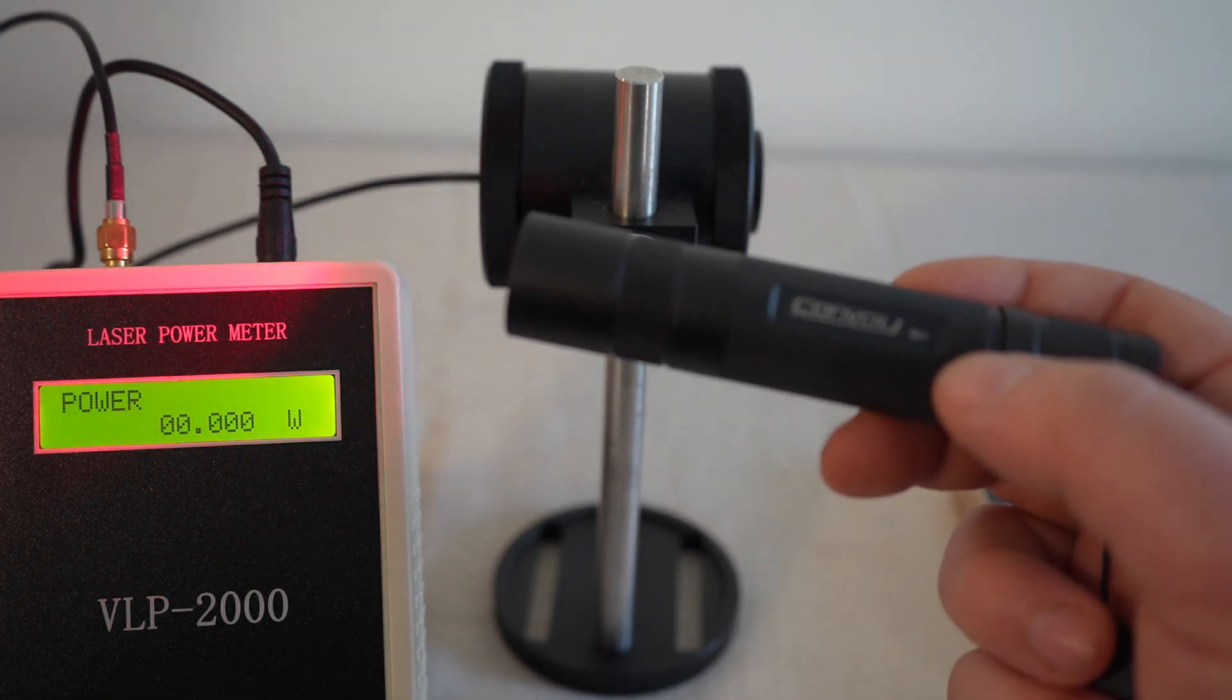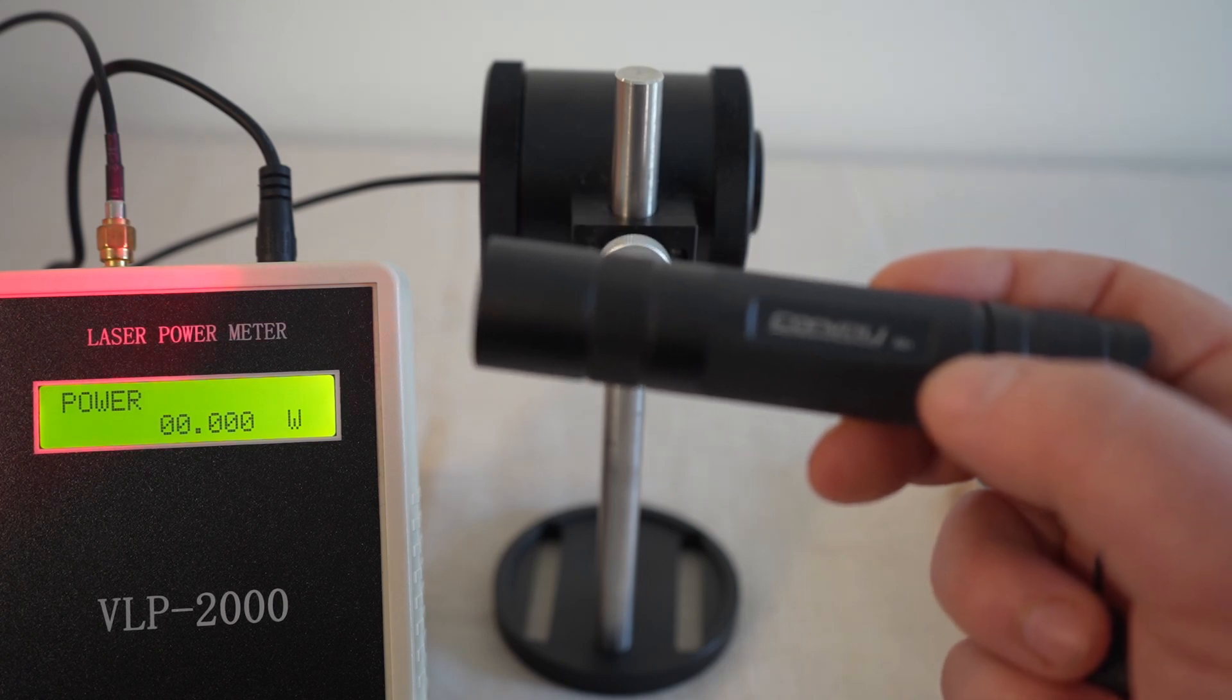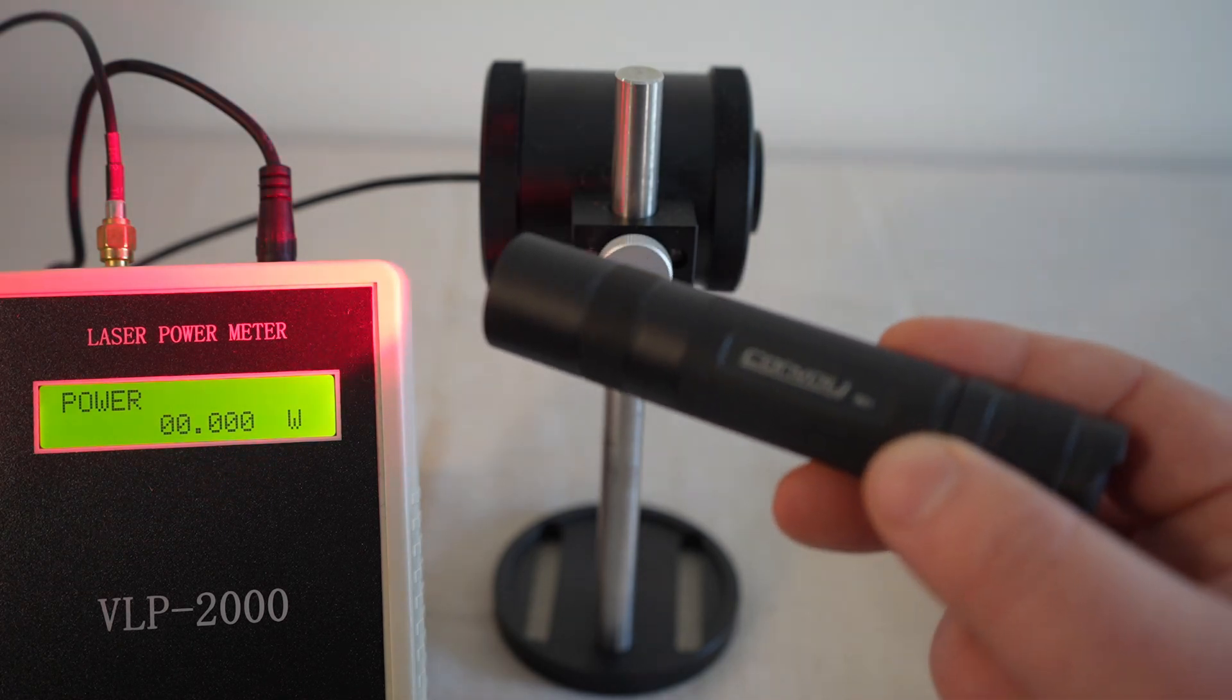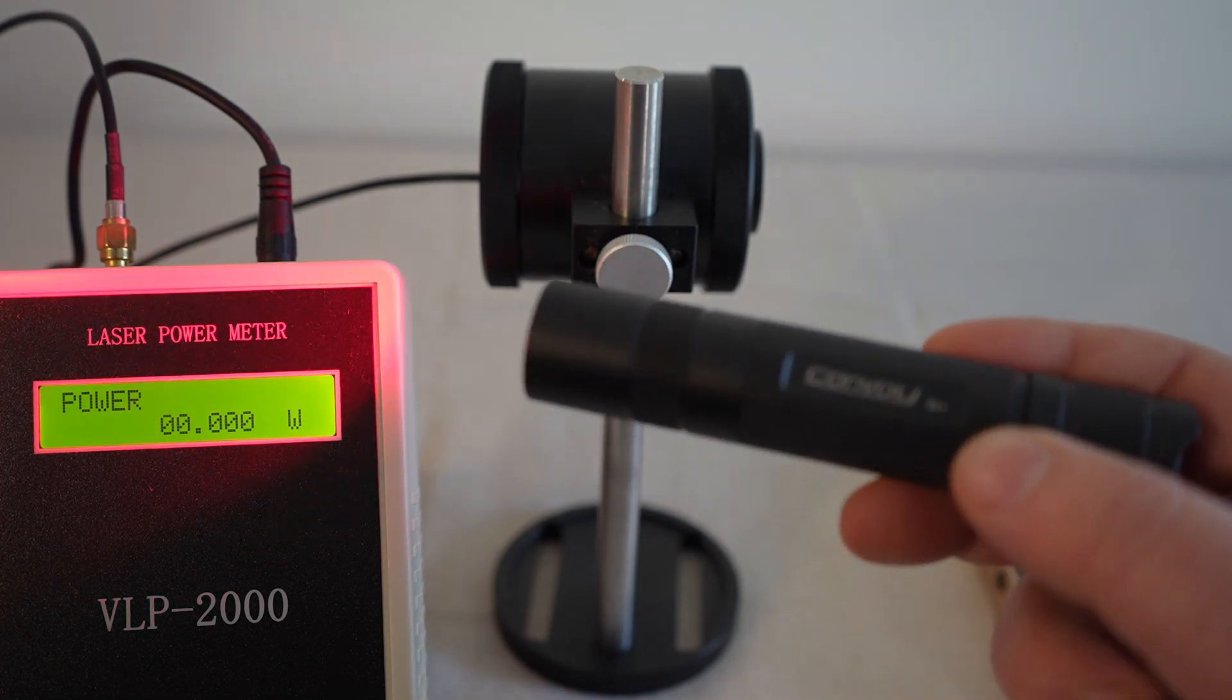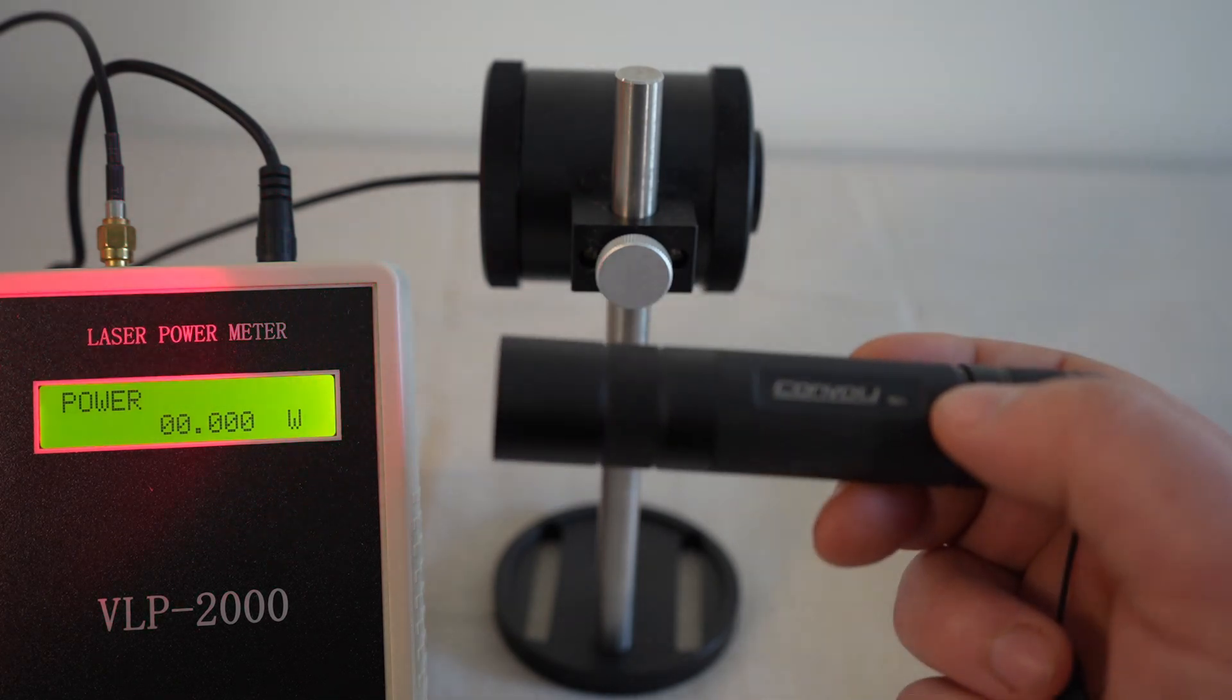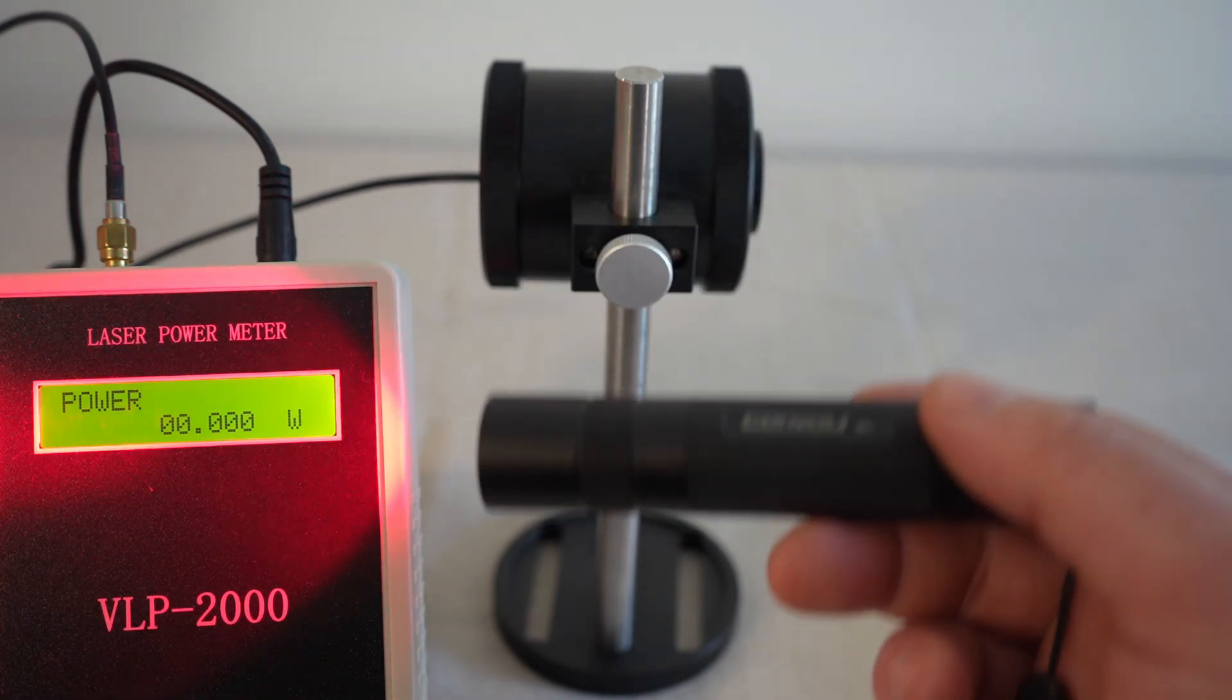It's this Convoy S2 Plus with the 660 nanometer LED in it, and you can find it for $17 on AliExpress with free shipping. And there may be some cheaper tactical flashlights that I've found in the past on Amazon or eBay, but this Convoy brand is a highly regarded one. I found them on some of the flashlight forums that this is a famous brand that's very trustworthy, and this particular flashlight does feel very nice.